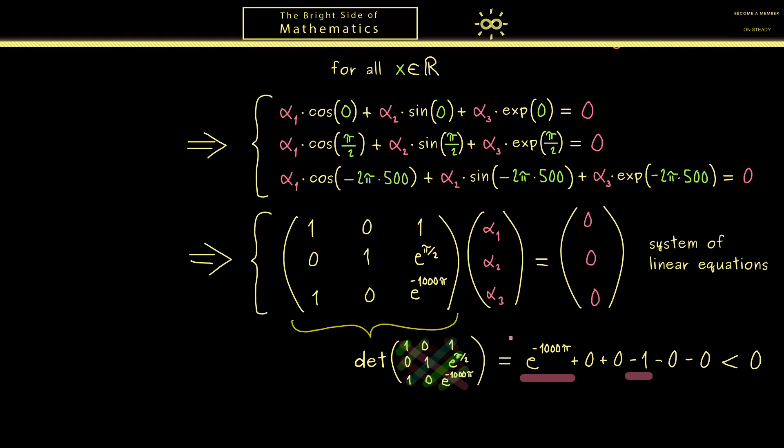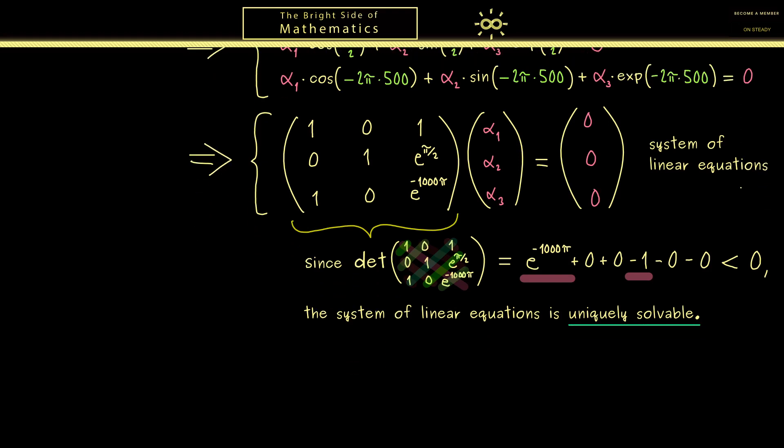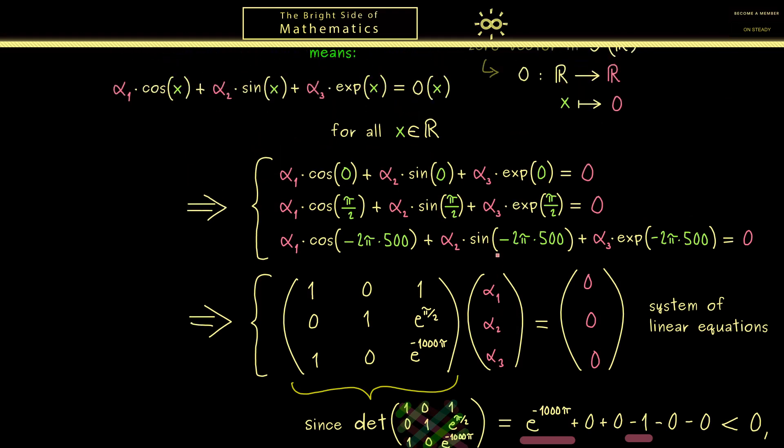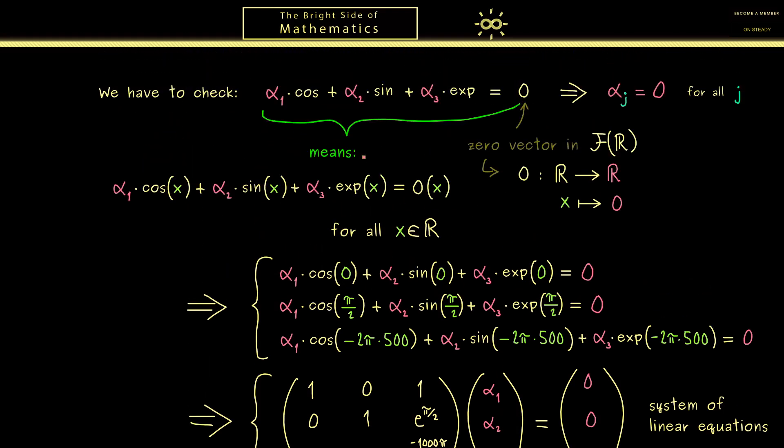So definitely this determinant is close to minus 1, so less than zero. So the important conclusion is this determinant is non-zero. And therefore, as we have said before, this system is uniquely solvable. And moreover, we can immediately write down the solution. And this simply means that all alphas here are given by zero. And now if you recall, this here is exactly what we wanted to show for the three functions involved. Hence, the functions are actually linearly independent.